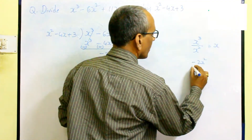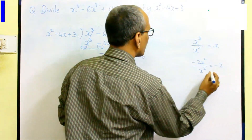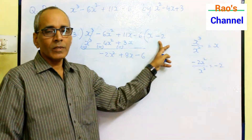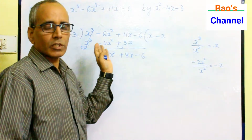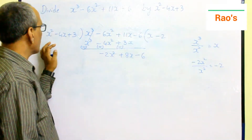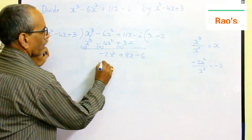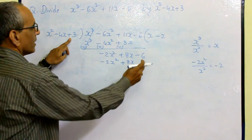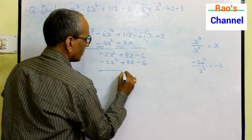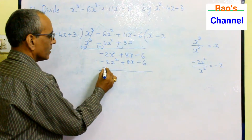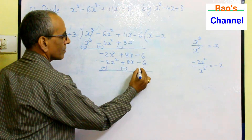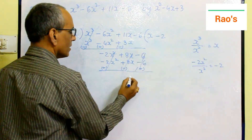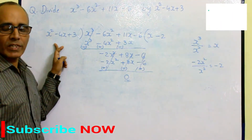x is the first term, so x times x² gives x³, x times -4x gives -4x², and x times 3 gives 3x. Subtraction: x³ minus x³ is 0; -6x² plus 4x² gives -2x²; 11x minus 3x gives 8x. Carry the last term -6. Next, -2x² divided by x² gives -2. Multiply the trinomial by -2: -2 into x² gives -2x², -4x into -2 gives +8x, 3 into -2 gives -6. Subtract — everything gives 0. So the trinomial is also a perfect factor of this polynomial.